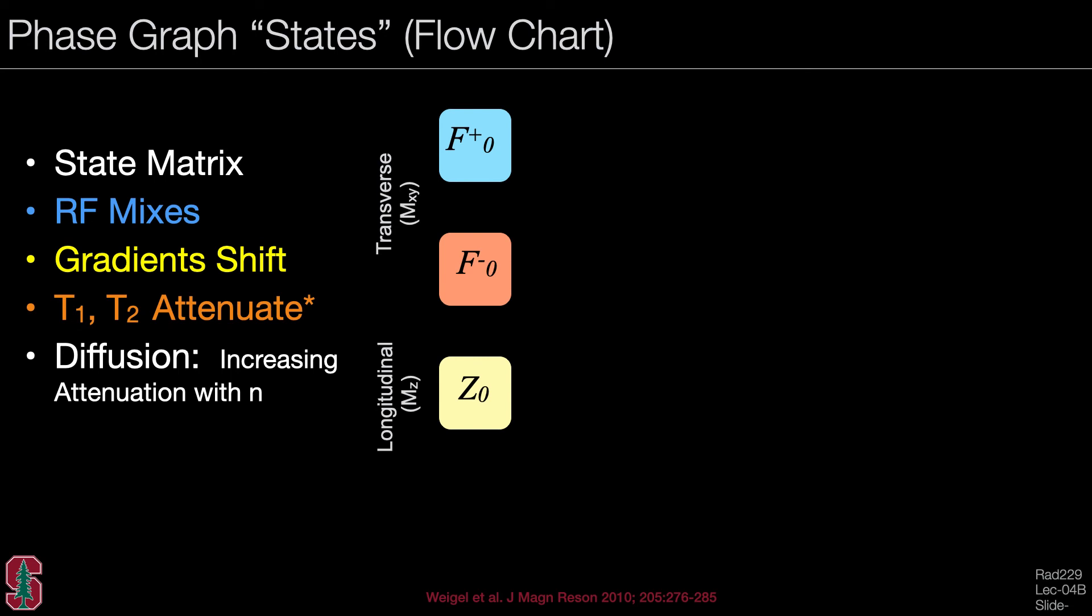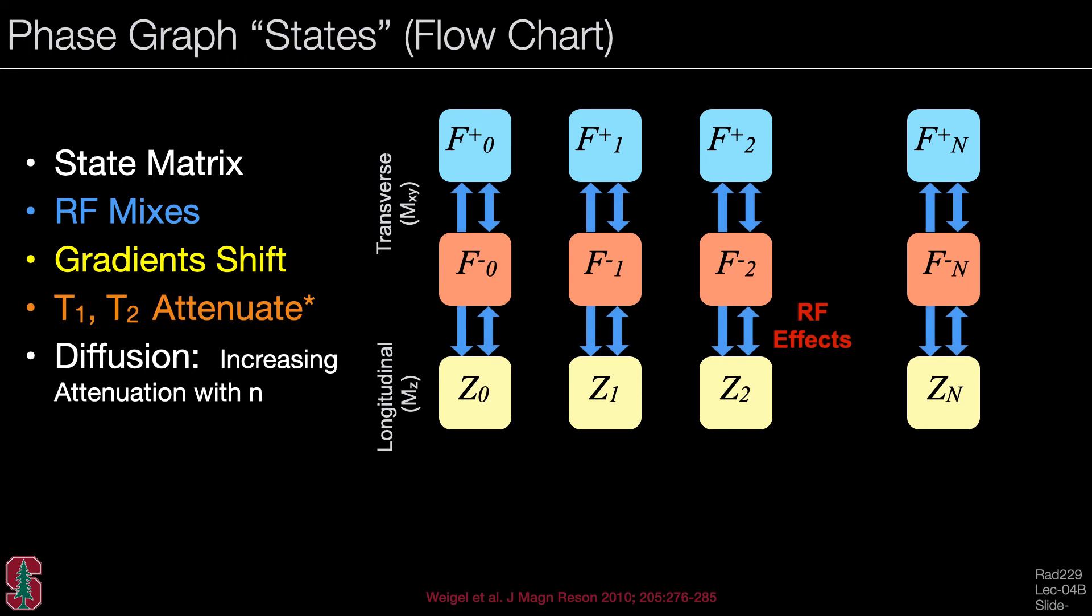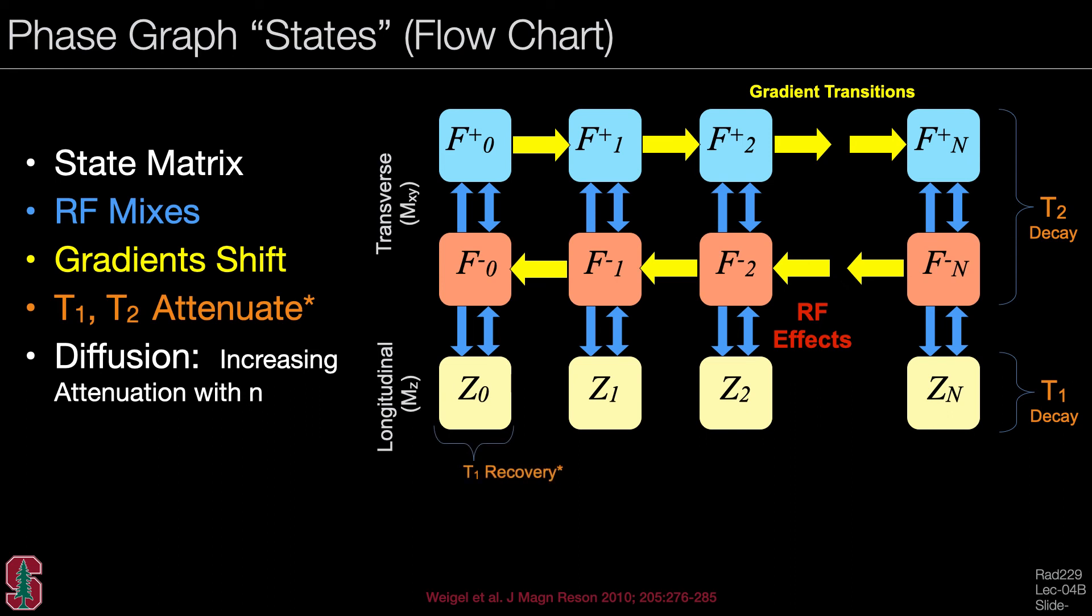Let's look now at a flow chart of the EPG phase graph states. So we start with a state matrix that looks a lot like our Q matrix as shown here. Remember that the RF pulse mixes magnetization between coefficients of a given order. Gradients will shift the coefficients from one order to the next. Or on the second row, they will shift them down from a higher order to a lower order corresponding to rephasing. T1 and T2 will attenuate all states, T1 and T2 relaxation, and T1 recovery will be applied to the Z0 state. Although not covered here, diffusion can actually be applied very conveniently with increasing attenuation with the order of the states.